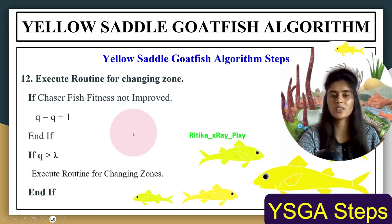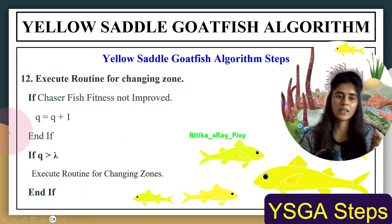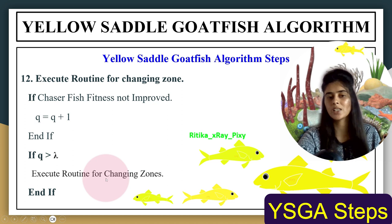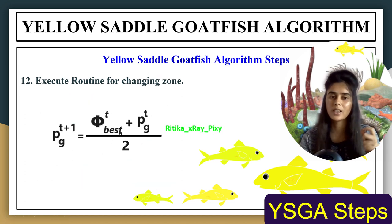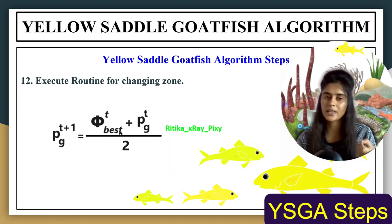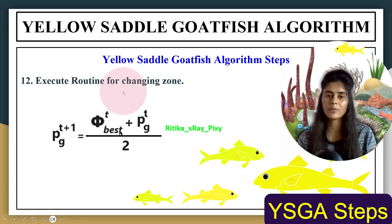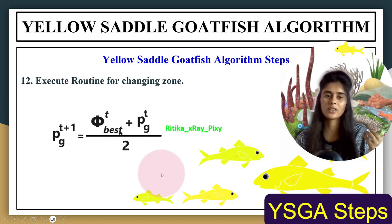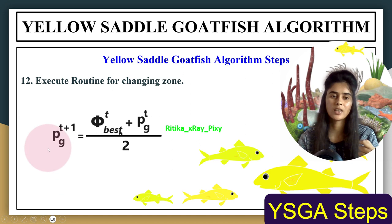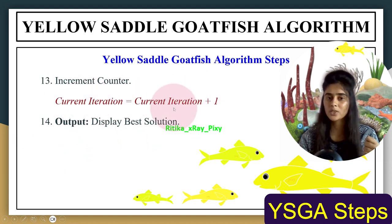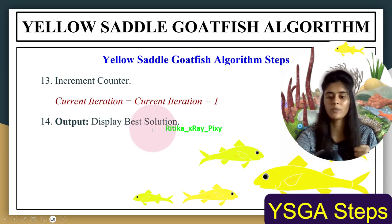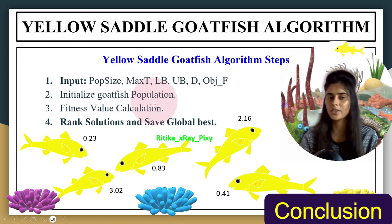We then execute the routine for the changing zone. If the chaser fish fitness value has not improved, we increment a counter q and check whether q is greater than lambda. If true, the changing zone routine executes — simulating when the group has completely exploited one hunting area and needs to move to a new area. The new location is calculated using a designated equation. The counter is then incremented, and if the stopping condition is met we stop and display the best solution.